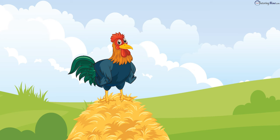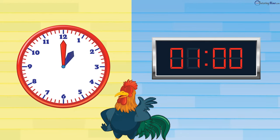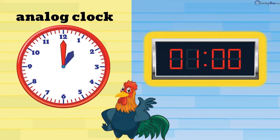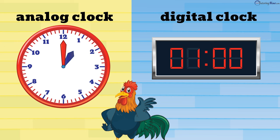First things first. There are two types of clocks. This is an analog clock. And this is a digital clock.